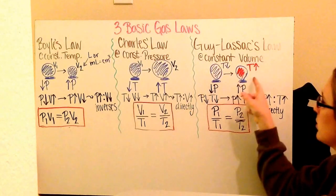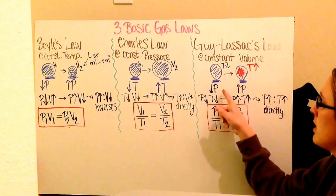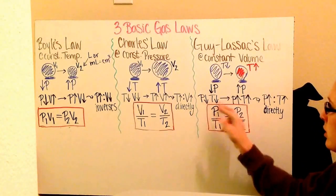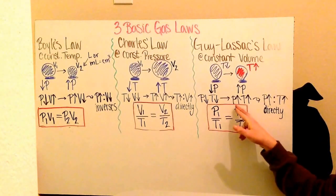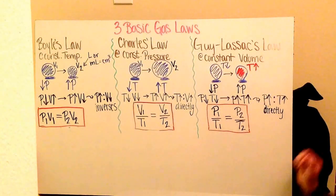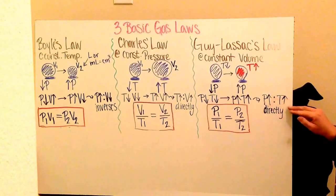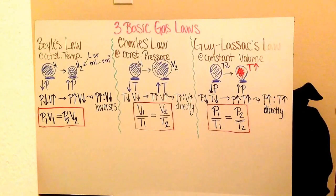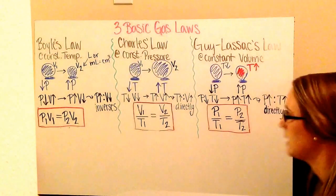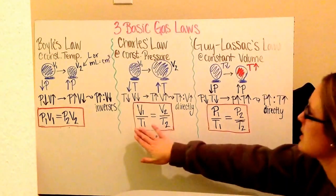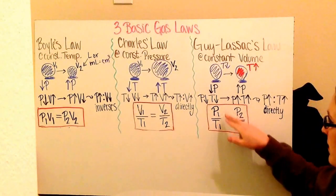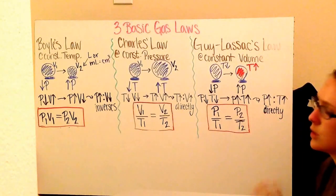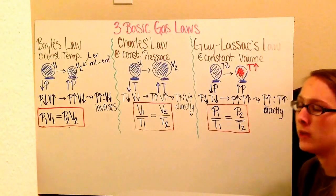I go from a cold balloon to a hot balloon because I'm increasing pressure. I start with low pressure and low temperature, and increase to high pressure and high temperature. Therefore, as my pressure increases, so does my temperature — they have a direct relationship. Just like Charles' Law, I have P1 over T1 is equal to P2 over T2. Take a moment to copy that down.